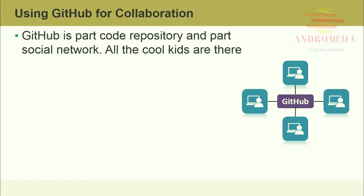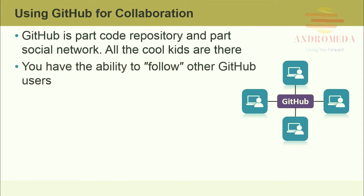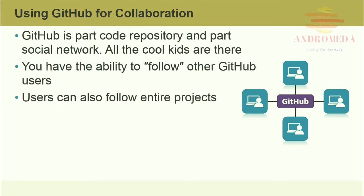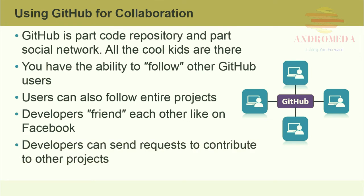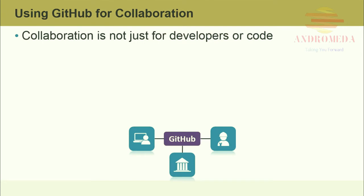The whole GitHub application is built around getting public exposure to your code and asking for collaboration. Users can follow other GitHub users and entire projects. Developers friend each other like on Facebook and can send requests to contribute to other projects. The main functionality of GitHub is forking — copying an entire code repository from one account into another — effectively allowing you to take on the authorship of an entire project. Since Git encourages documenting small code changes, other developers can look to see how previous programmers solved tricky problems. Recently GitHub has grown beyond source code management; collaboration is not just for developers or code.